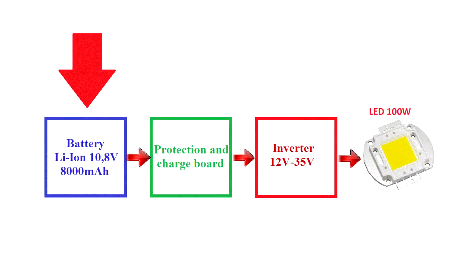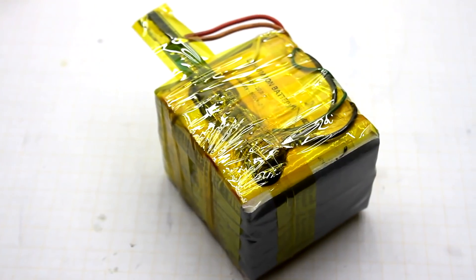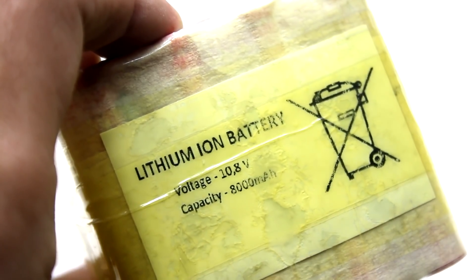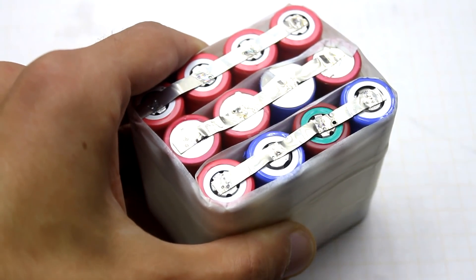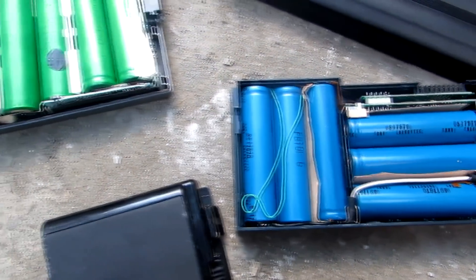As the lantern is portable, it is powered by the battery. The battery is lithium-ion. In my case, it is assembled from 18650 cells. All are used and taken from laptop batteries.